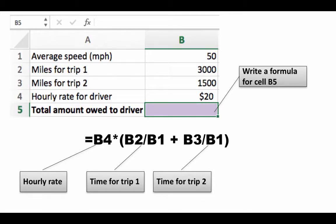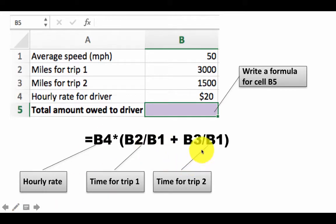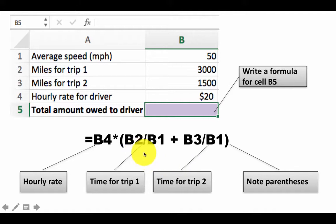There is another way to look at it: you could compute the total distance first and then compute the time. In other words, write B4 times (B2+B3)/B1. The parentheses play a very important role here to ensure we first compute the total hours and then multiply by the hourly rate.